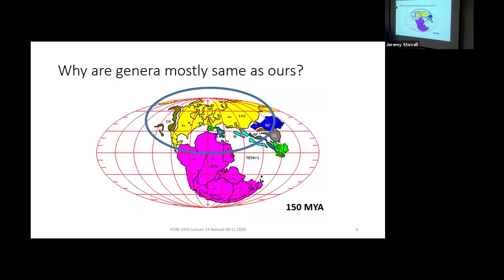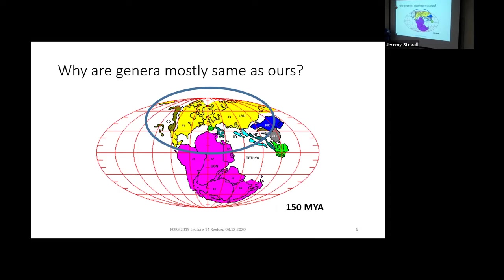You're going to recognize almost all the genera and families we cover today, and there's a good reason for that. North America, Asia, and Europe were all part of one continent at one point. Just like we saw with the austral pears, allopatric speciation has occurred. Many of the trees in Europe — oaks, pines — are the same as ours in North America, just different species but the same genera.